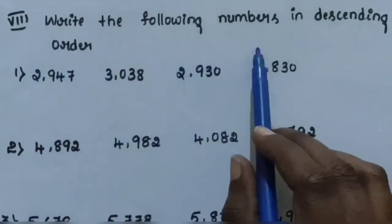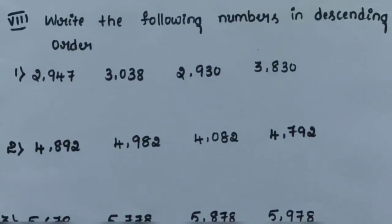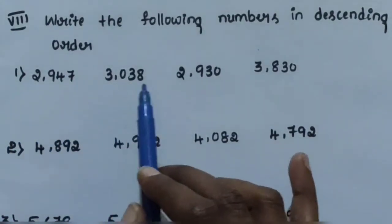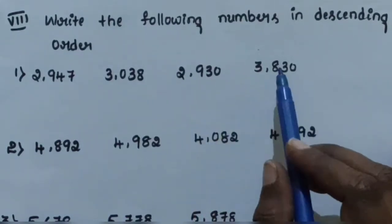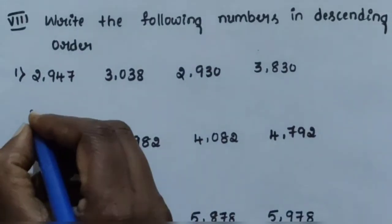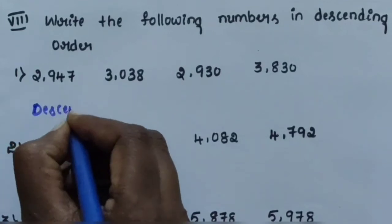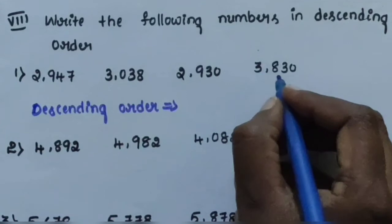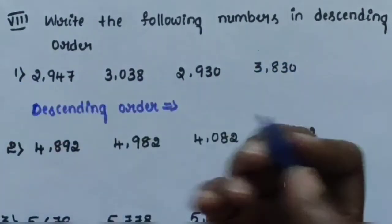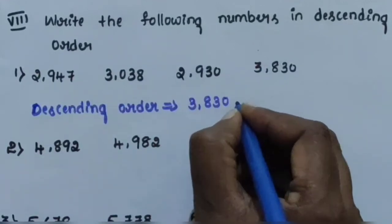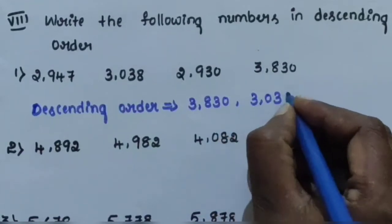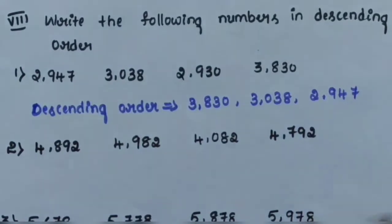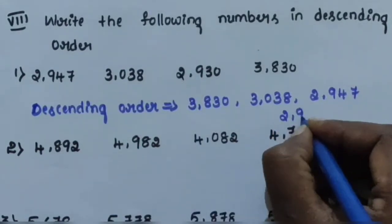Next section: write the following numbers in descending order. Descending order means the arrangement of numbers from the greatest to the smallest. Question number 1: arrange 2,947; 3,038; 2,930; and 3,830 in descending order. 3,830 is the greatest number. The order is: 3,830; 3,038; 2,947; and 2,930.